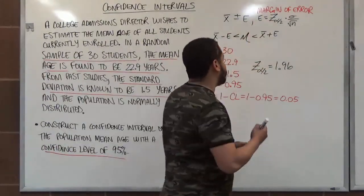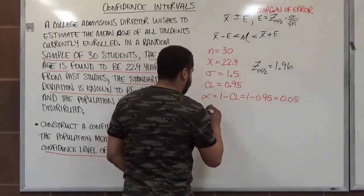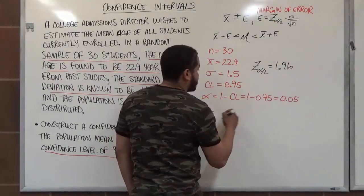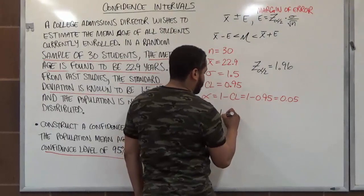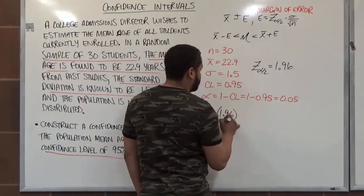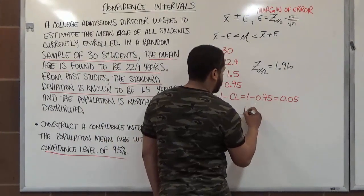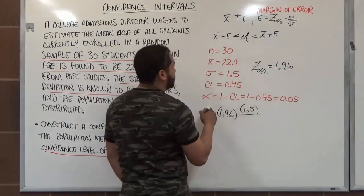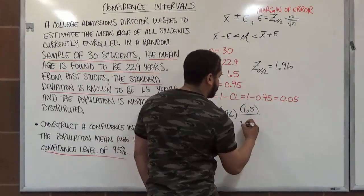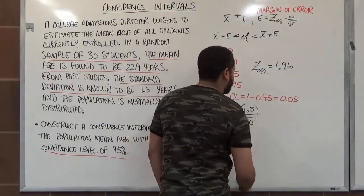So we have everything we need to calculate our margin of error. And the z alpha divided by 2 will be 1.96. We're multiplying that by our sigma, which is 1.5. And we're dividing the sigma by the square root of n, where n is 30. So we have the square root of 30 here.